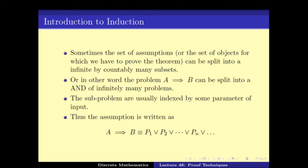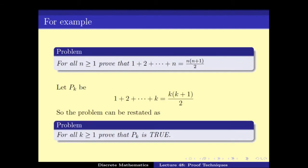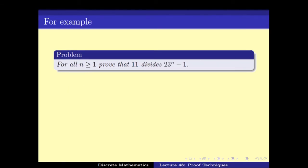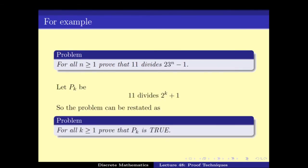For example, if you can split up A implies P as P1 to P infinity, for example in this problem we have seen many of this kind of examples where to prove that the sum of the first n numbers is n into n plus 1 by 2 is same as for the sum of k numbers is k into k plus 1 by 2. And the problem thus becomes for all k prove Pk is true. Similarly, for other problems that we have seen.